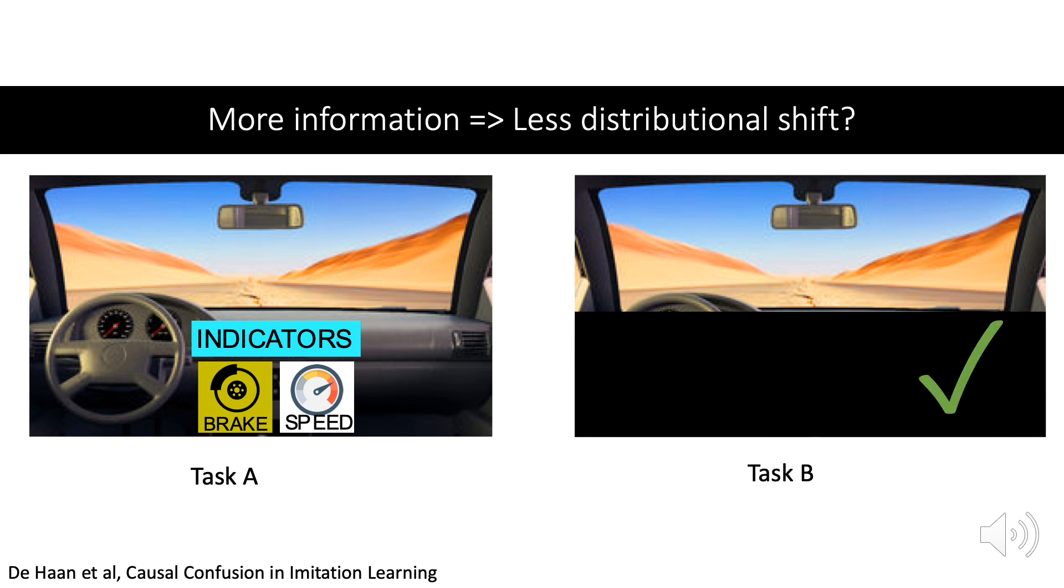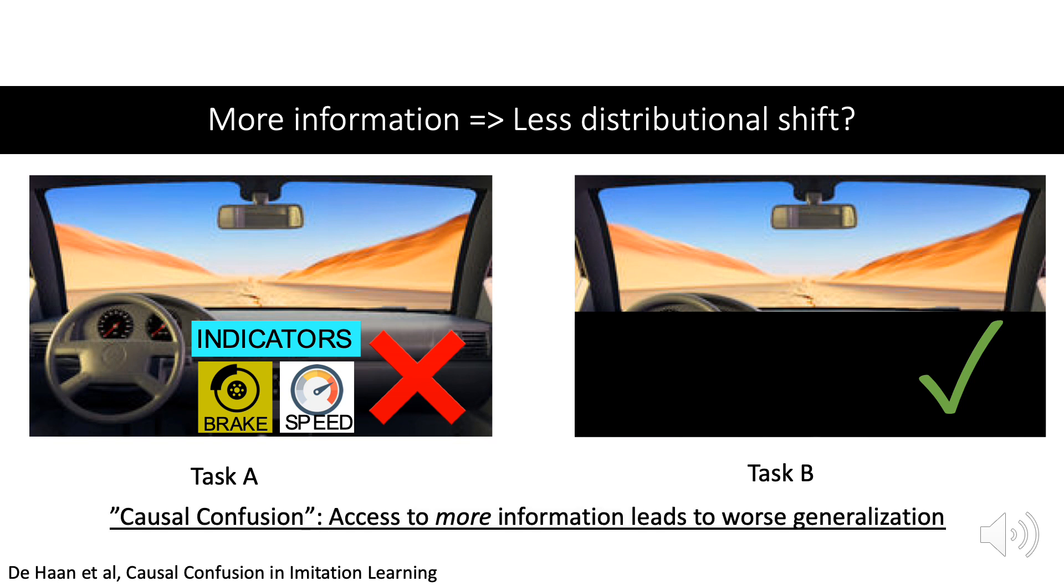It turns out that model B learns well, but model A wrongly learns that it must apply the brake whenever it sees the brake indicator on, even though the brake light is the effect of braking, not the cause. So we have a very surprising result, that more information leads to worse generalization under distributional shift. We call this causal confusion.